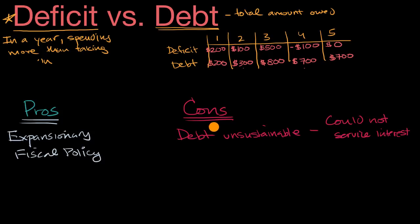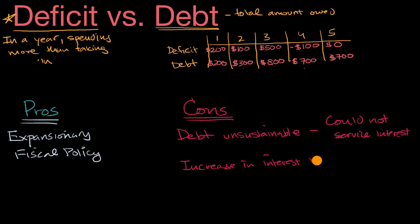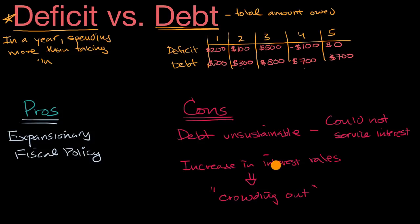Another con of running large deficits — which could lead to large accumulated debts — is that it can affect interest rates in the broader market, leading to an increase in interest rates. When we study the money market, the more the government is out there trying to borrow money, that shifts demand in the money markets to the right. If interest rates increase, that could lead to the crowding out effect, where because of increased interest rates, fewer potential private borrowers will borrow money to invest. The big takeaway: don't confuse deficit and debt. Deficits and surpluses refer to how much you are over or underspending in a given year; debt is the total amount you owe.